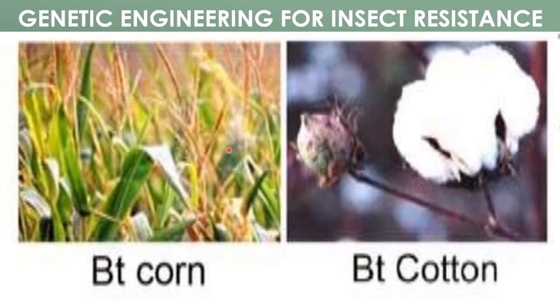Bacillus thuringiensis is a gram-positive aerobic sporulating bacteria that synthesizes crystalline protein during sporulation. Crystalline proteins are highly insecticidal at very low concentration. This crystalline structure of the inclusion is made up of a prototoxin subunit called delta endotoxin. The proteins are non-toxic to mammals and other animals.